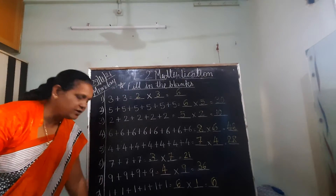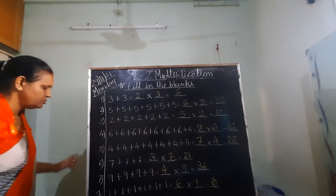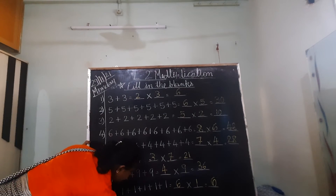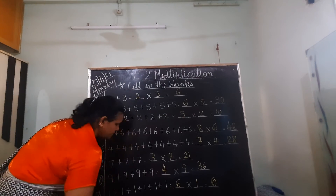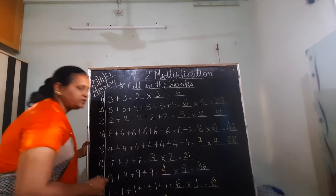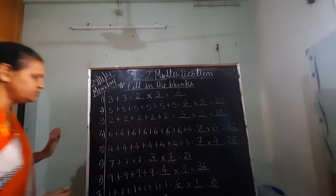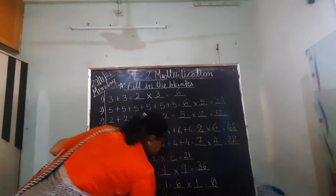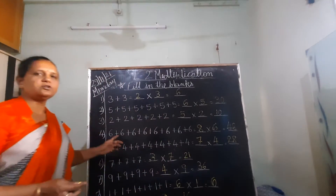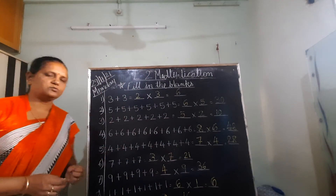8 is repeated for how many times? 1 and 2. So write down 2 here. And 8 — 2 8's are 16. So students, this one you have to complete in your Maths notebook.